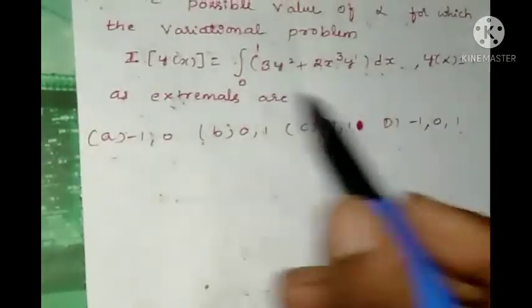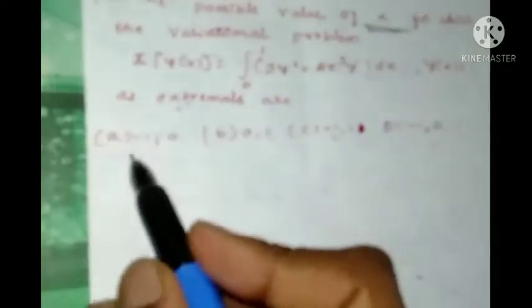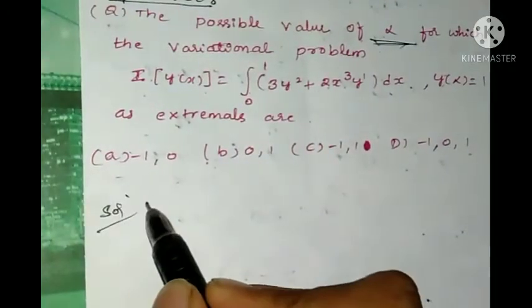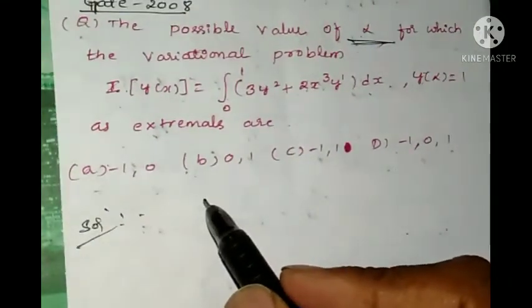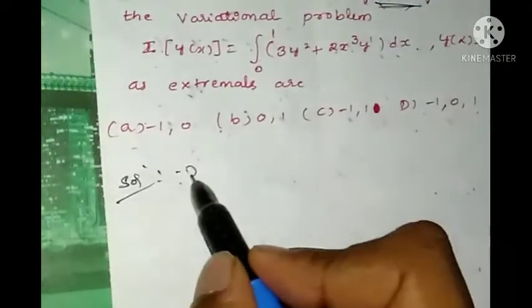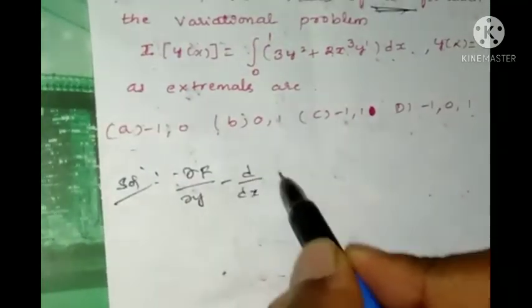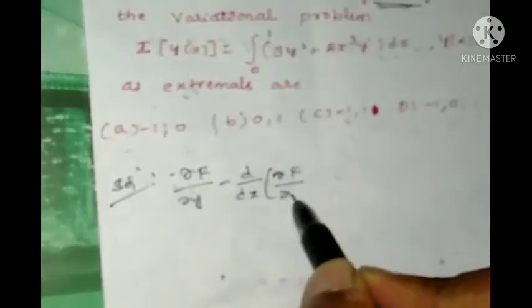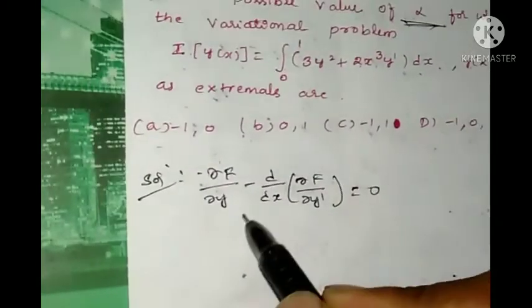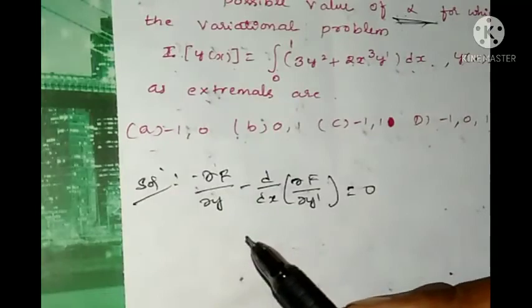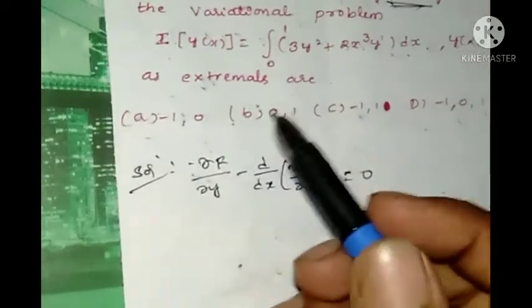We know that by Euler's formula or Euler-Lagrange's formula, ∂F/∂y - d/dx(∂F/∂y') = 0. By using this formula we have to evaluate this problem.